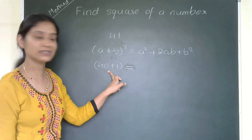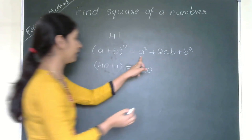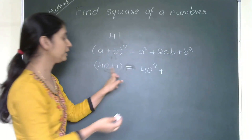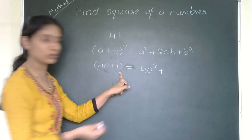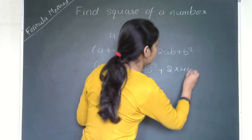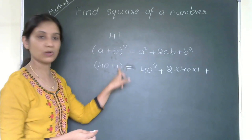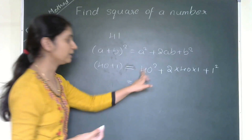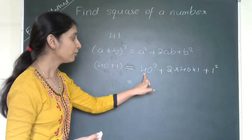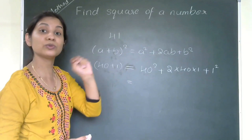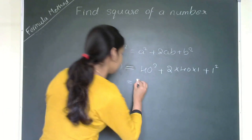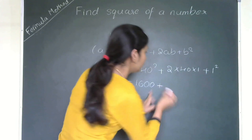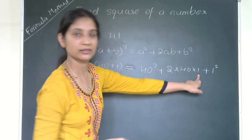Now how can we write it? In the place of a, 40 is there. So: 40² plus 2 into 40 into 1, plus 1². How will you solve this? 40 square — 4 square is 16 and you put 2 zeros, so 40² is 1600. Plus 2 into 40 into 1 is 80.